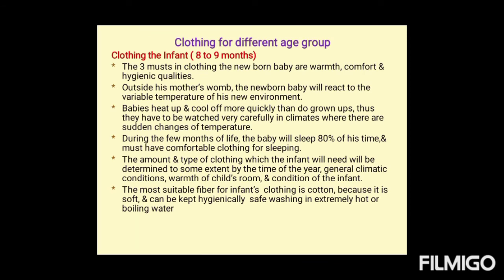Now let's see the selection of clothing for different age groups. Clothing for infants (up to nine months): the three musts in clothing for a newborn baby are warmth, comfort, and hygienic qualities. Outside the womb, the newborn baby reacts to the variable temperature of the new environment. Babies heat up and cool off more quickly than grown-ups, so they have to be watched very carefully. During the first few months, the baby sleeps about 80% of the time and must have comfortable clothing. The most suitable fiber for infant clothing is cotton because it is soft and can be kept hygienically safe by washing in extremely hot or boiling water.